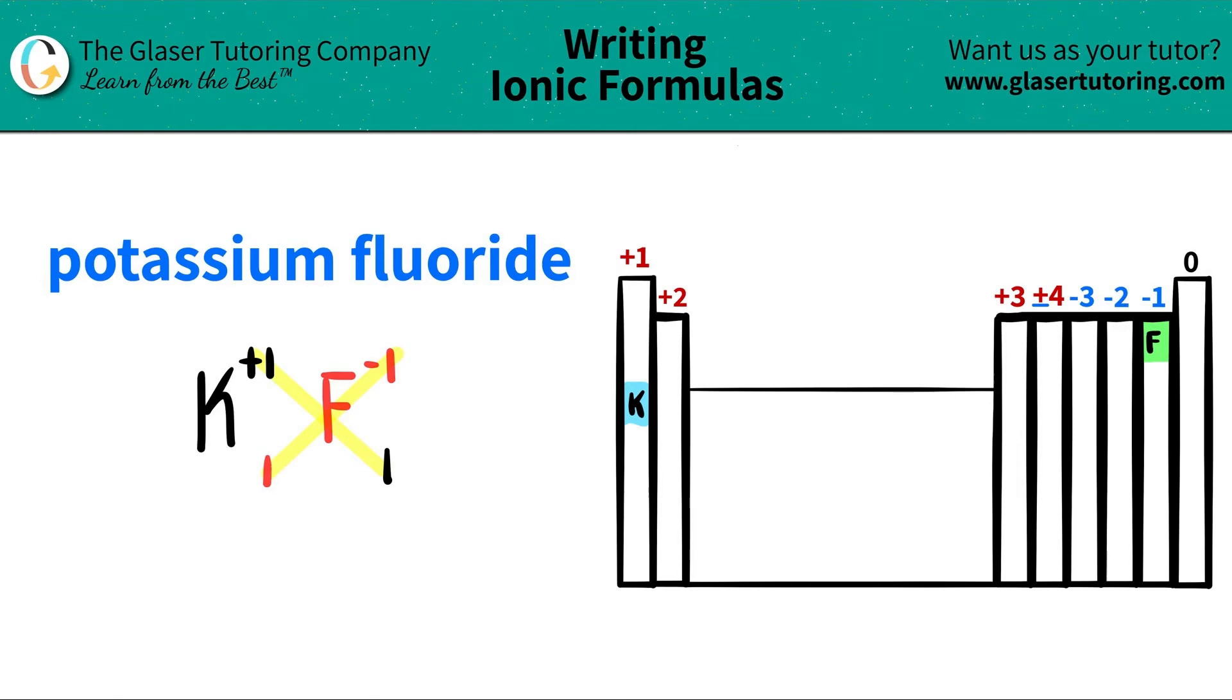So I'm ready to write my compound. I have K. I have only one of them, so I don't have to write the 1. And then I have F. I don't have to write the 1 because I only have one of them. So this is what potassium fluoride is. It's just KF.